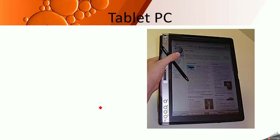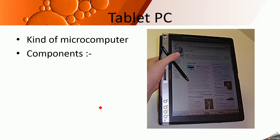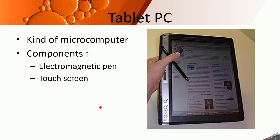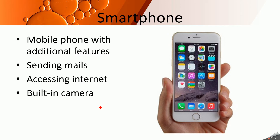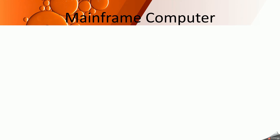Next is a tablet PC. It is a kind of micro computer that performs all tasks your personal computer does. Its components include an electromagnetic pen, touch screen, and it also comes with OCR software, that is optical character recognition software. Next is a smartphone, which doesn't require much explanation — it is a mobile phone with additional features like sending mails, listening to music, accessing the internet, and taking pictures.